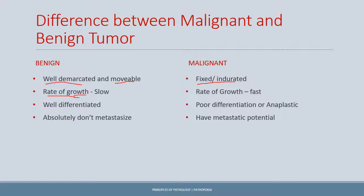The rate of growth is slow in case of benign tumors. This is not hard to understand: since benign tumors do not metastasize by definition, they would obviously be slow in growth. However, this is a general principle — there are many exceptions where tumors may be fast growing yet have absolutely no potential to metastasize, which would still classify them as benign.